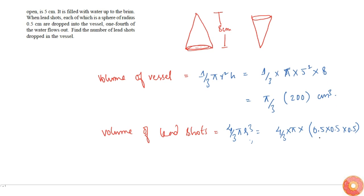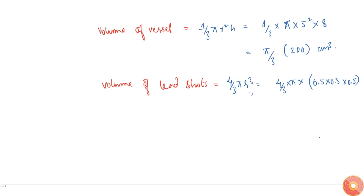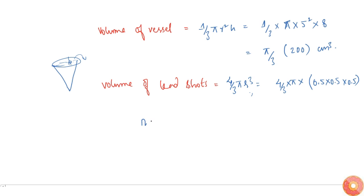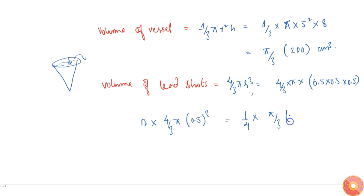When n lead shots are dropped into the vessel, one-fourth of the water flows out. When a cup is filled to the brim and a lead shot is thrown in, the volume of water that comes out equals the volume of the lead shot. So if n are thrown, the total volume that comes out equals n times the volume of each lead shot, which is four by three pi into 0.5 cubed. This equals one-fourth of the volume of the vessel, which is pi by three into 200 divided by four, giving us 50. The pi by three cancels.